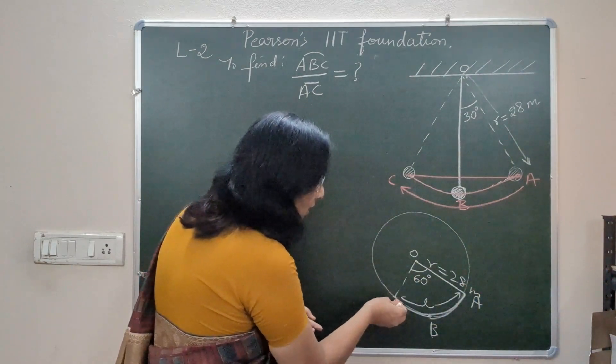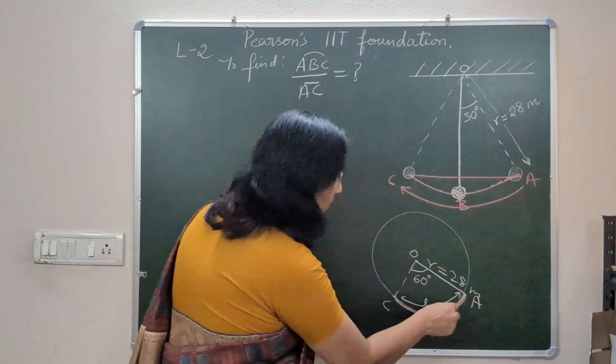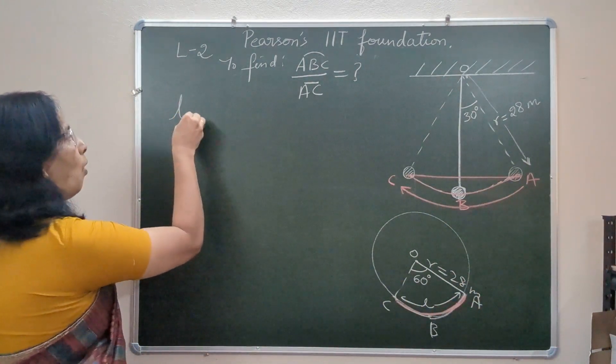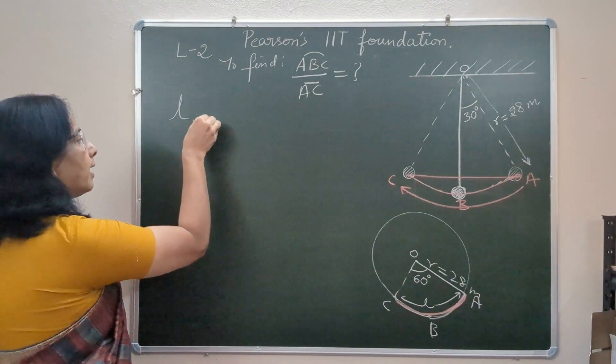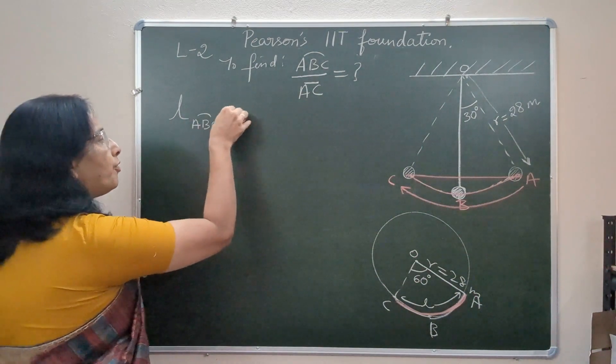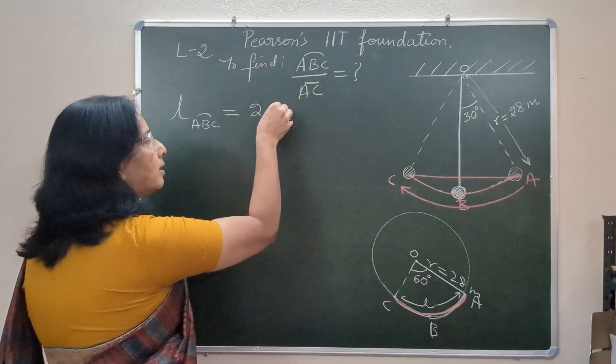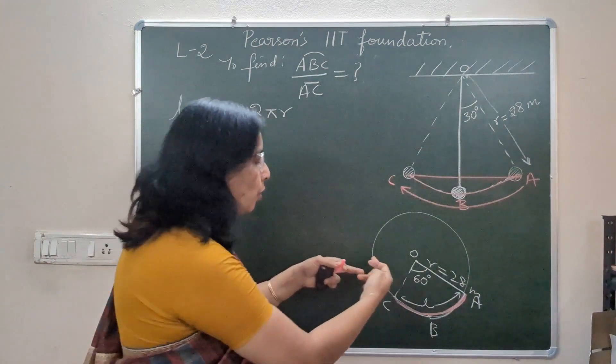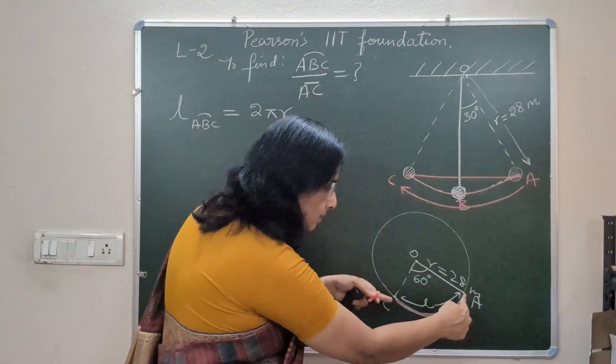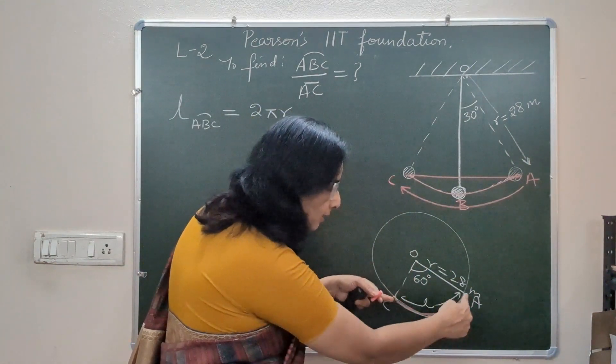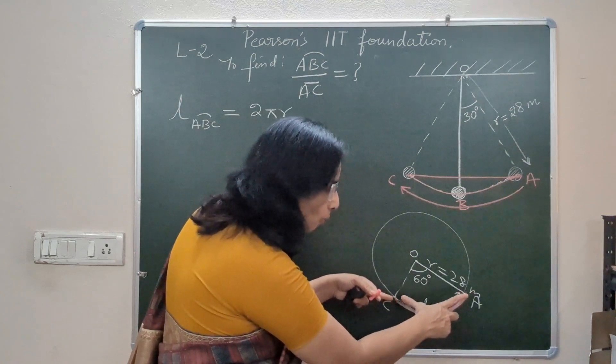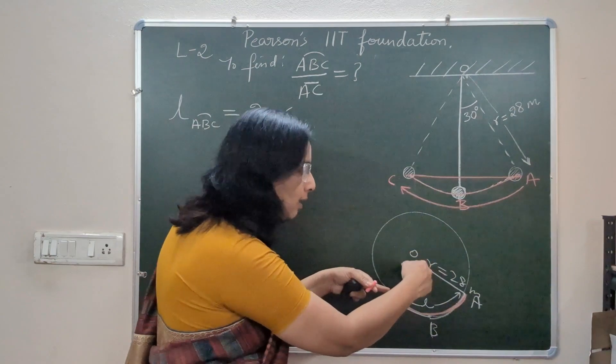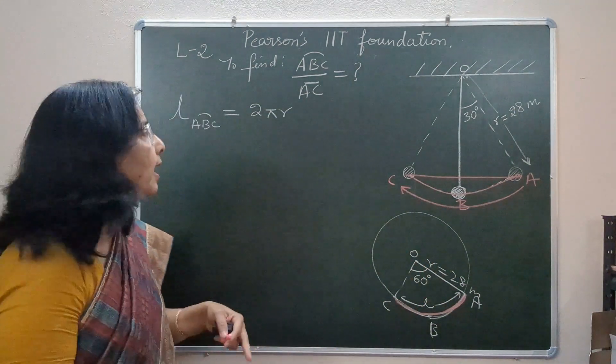In that case we will find length of this arc. Length of arc ABC has a formula: total circumference of circle is 2 pi r, so length of arc is 2 pi r times the fraction, which is the angle it subtends at the center divided by the angle the complete circle subtends at the center.